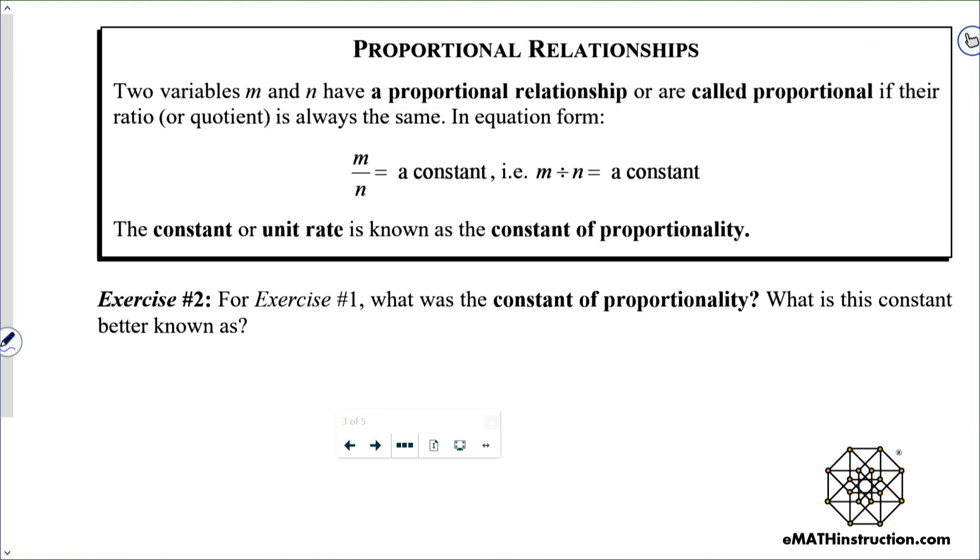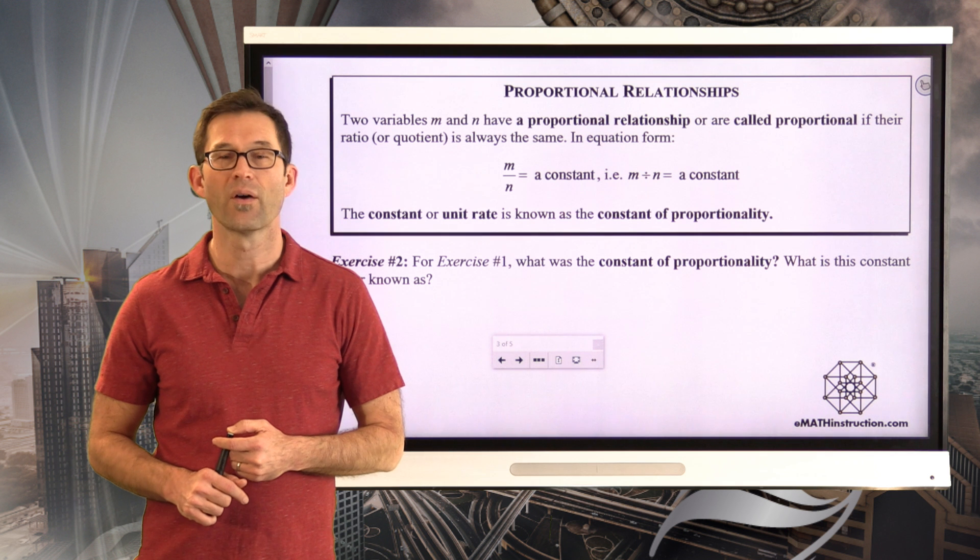Proportional relationships. Two variables, m and n, have a proportional relationship, or are called proportional, if their ratio, or quotient, is always the same. In equation form, m divided by n is equal to a constant. The constant is the unit rate. It's also known as the constant of proportionality.